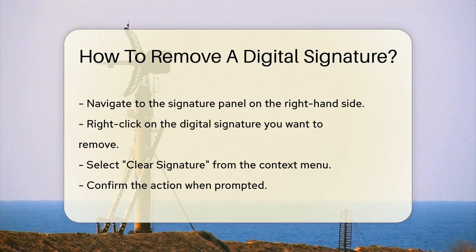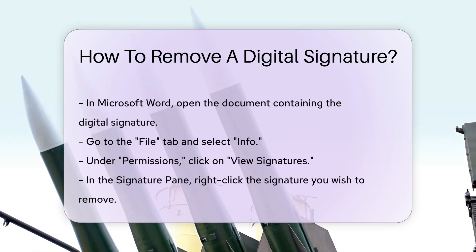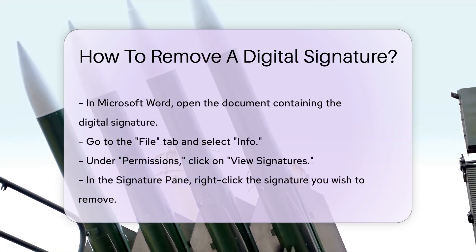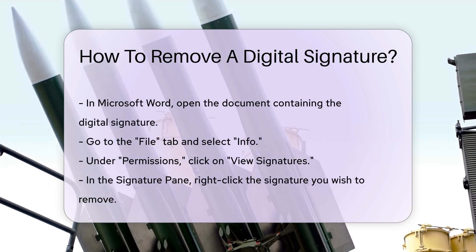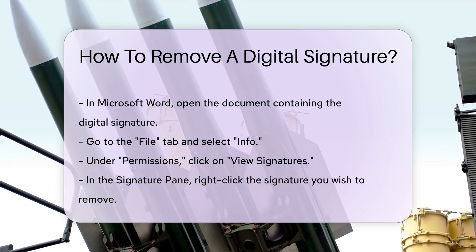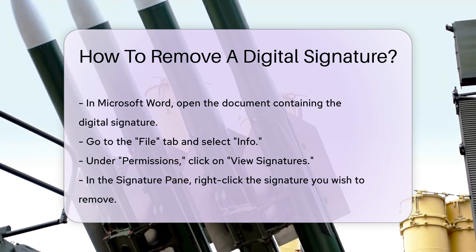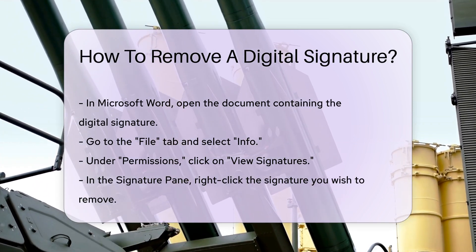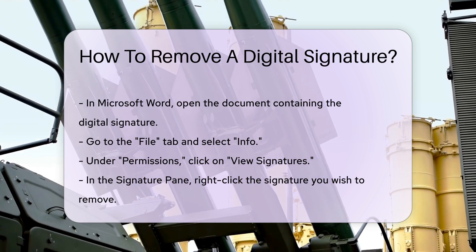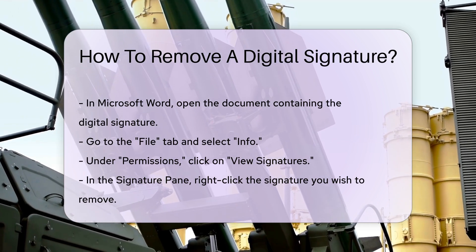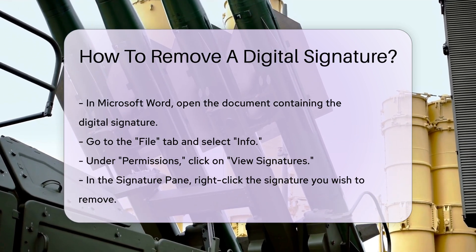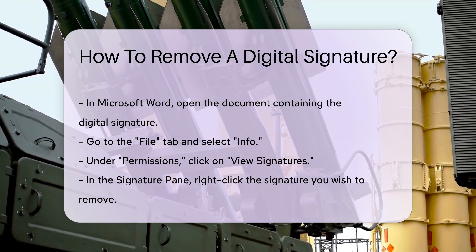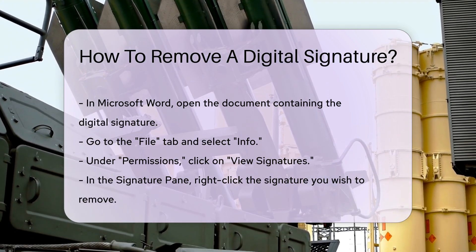Confirm the action when prompted. In Microsoft Word, open the document containing the digital signature. Go to the File tab and select Info. Under Permissions, click on View Signatures. In the Signature pane, right-click the signature you wish to remove. Select Remove Signature and confirm the action.